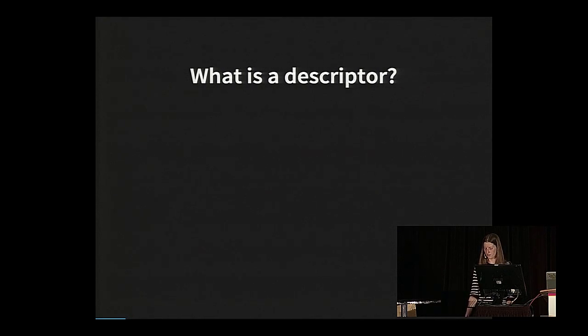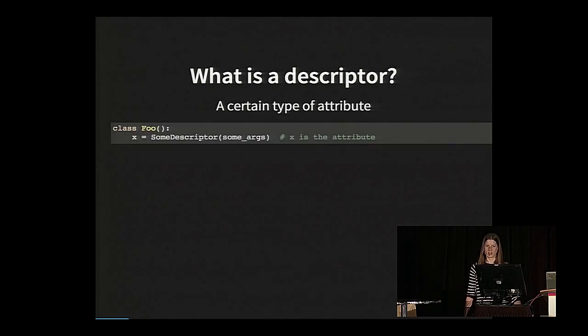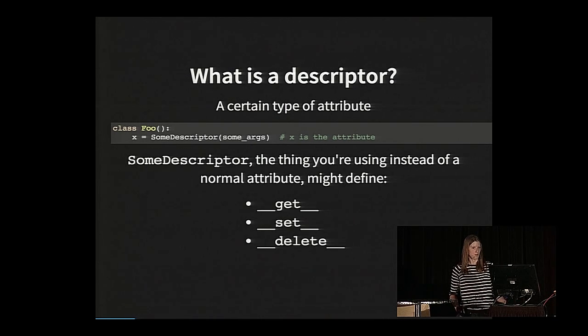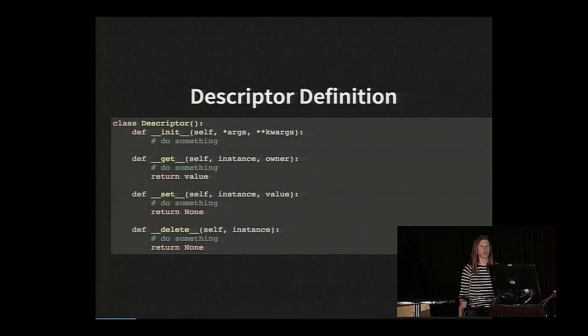So first things first. What exactly is a descriptor? It's a certain type of attribute. So here I have some descriptor, and I'm using this as a class attribute on this class foo. Some descriptor is something that I'm using instead of a normal attribute, like instead of a string or another random object. And what you define here in that descriptor is as long as you define dunder get, dunder set, and dunder delete, that's how this actually does its magic.